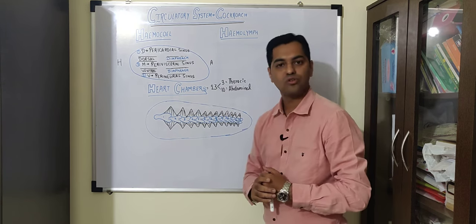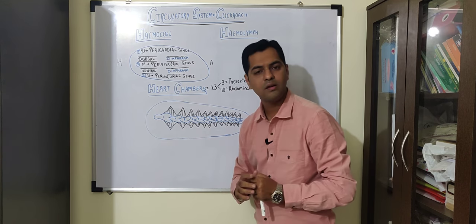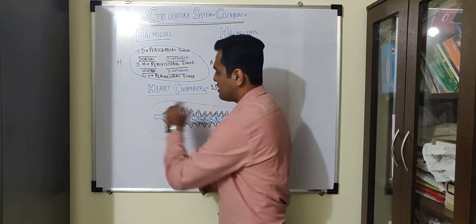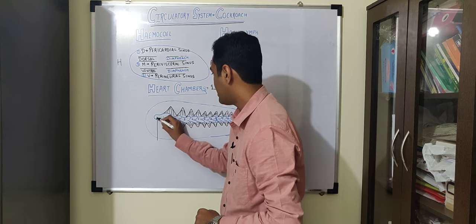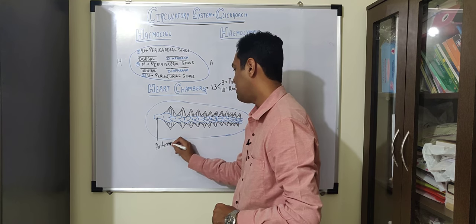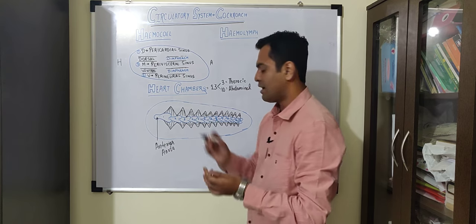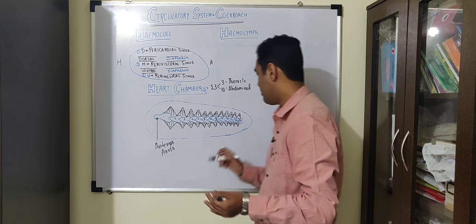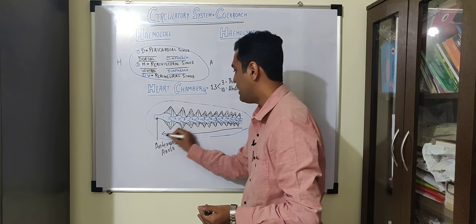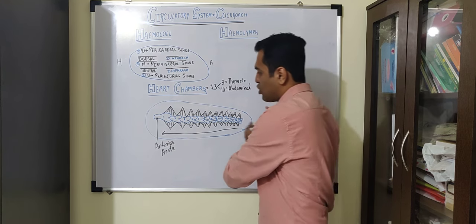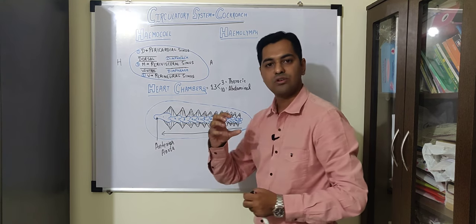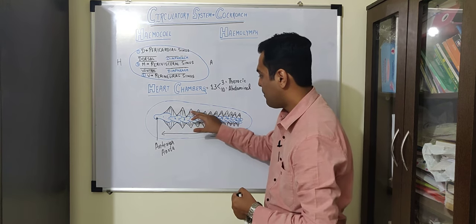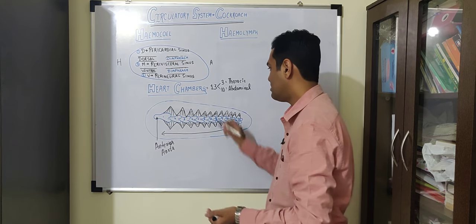The first heart chamber has an extension that reaches up to the head sinus, and this extension is known as the anterior aorta. Another characteristic feature of the heart chambers is that they are closed from behind and open at the front, so blood flows from the posterior to the anterior direction — from the abdominal region toward the head region — through muscular and systolic movements.